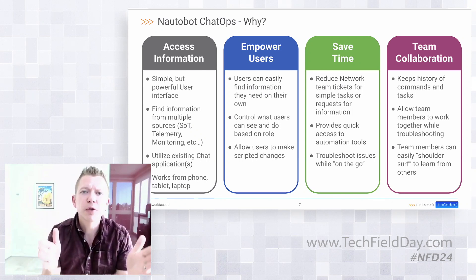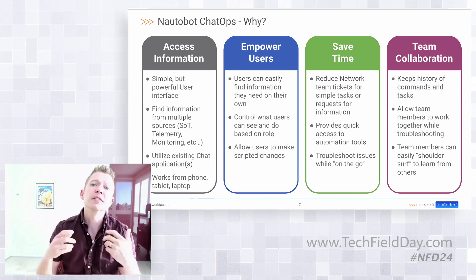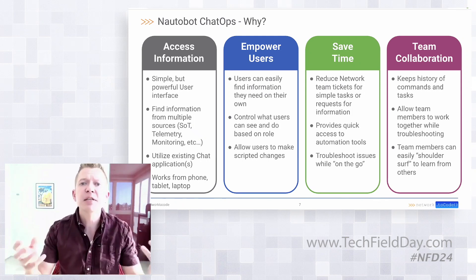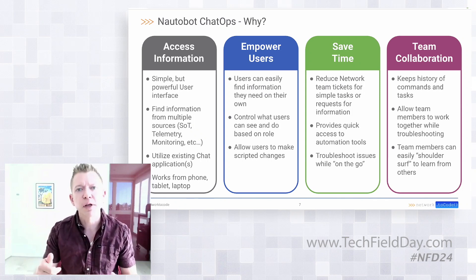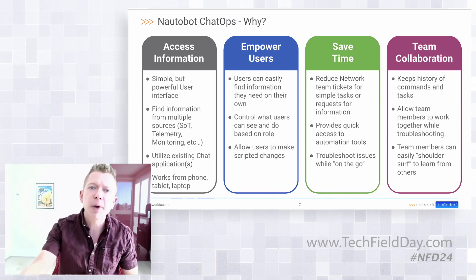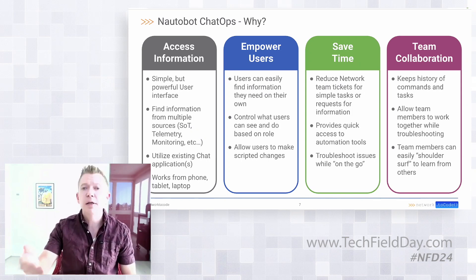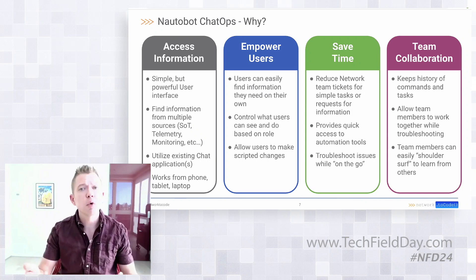We can empower users, and this is a really key component to think about. As it stands today, most likely when someone outside the network team needs a piece of information about the network, they either call someone in networking, chat a person directly, or open a ticket. There's a lot of inbound communication coming to the network team trying to get information. We can empower users to go get that information on their own, whether they're part of the network team or otherwise.